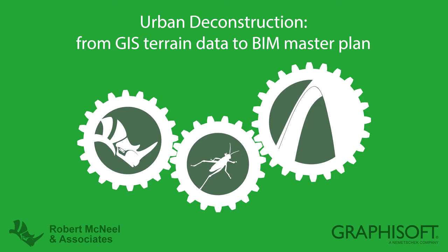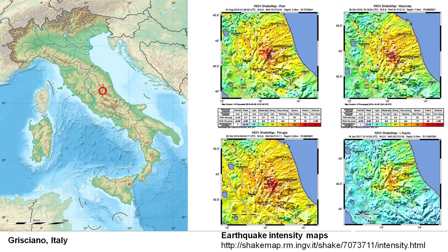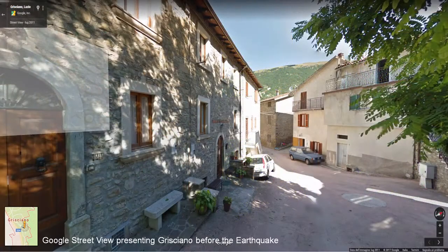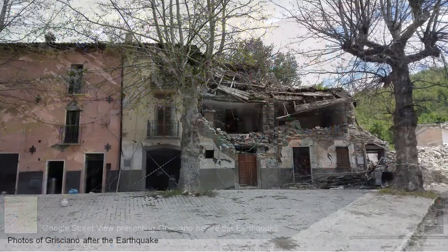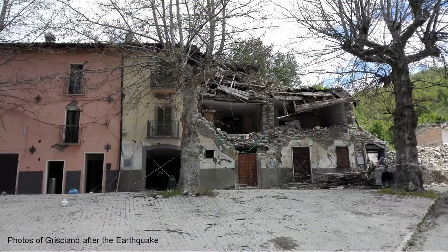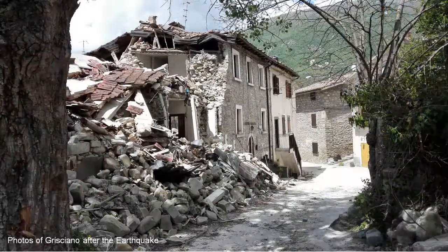This movie presents a real-life workflow scenario using the ARCHICAD Grasshopper Live Connection tool. A series of earthquakes destroyed the historic center of Grisciano, a small town in the center of Italy, in August 2016. The town municipalities needed a solution to acquire the digital models of those buildings that were destroyed during these seismic events.